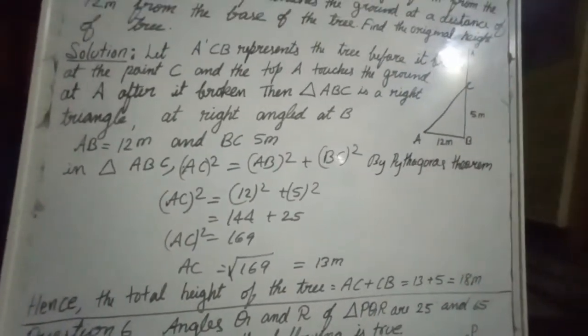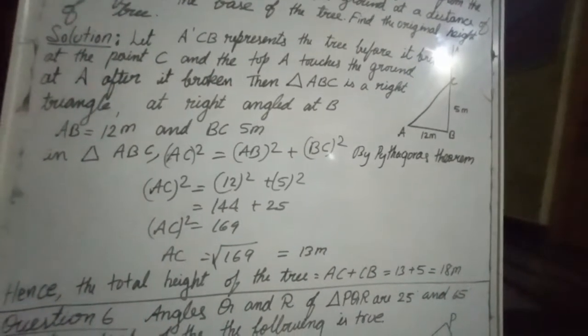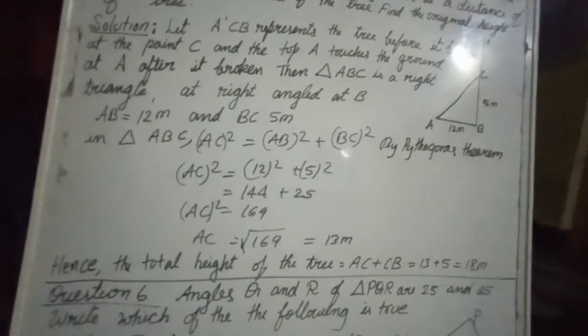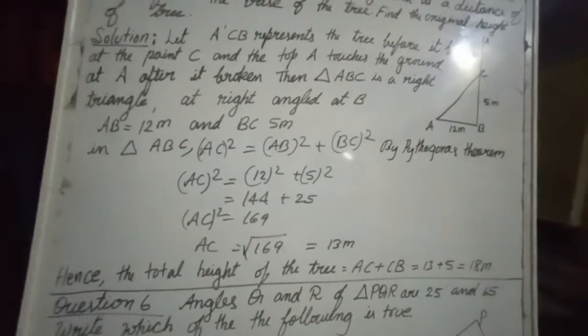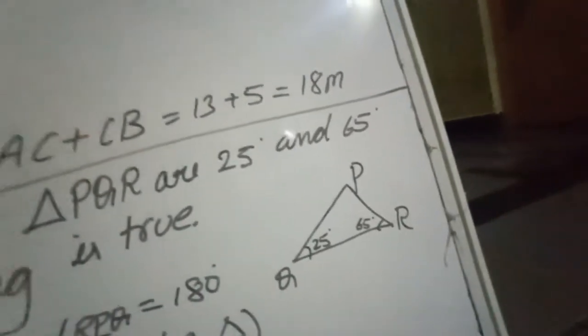Angles Q and R of PQR are 25 degree and 65 degree. Write which of the following is true. They have given 3 options. But let us see what they have given.